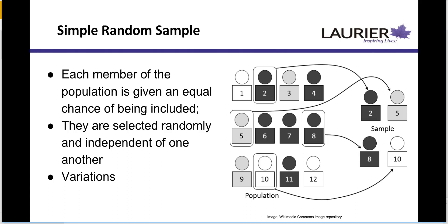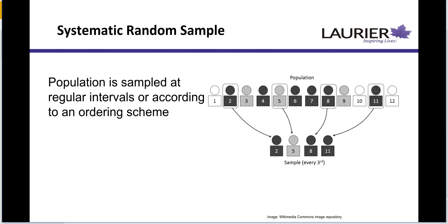There are a number of variations on simple random samples. For example, the systematic random sample — you have a population lined up in no particular order, and you pick somebody systematically according to some predetermined interval or ratio. The example here is picking every third person. If you're doing interviews out front of a Walmart, a systematic random sample means you grab every third person; or if you're doing a door-to-door survey, you grab every third household. That's an example of a systematic sample.